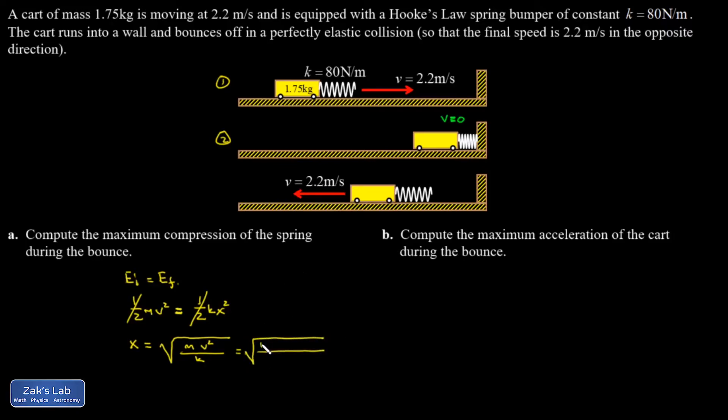So the mass of this guy is 1.75 kg. The speed was 2.2 m per second. I've got to square that. And the spring constant, 80 N per meter. And I get 0.325 m for the max compression, which looks a little nicer if you write it as 32.5 cm.